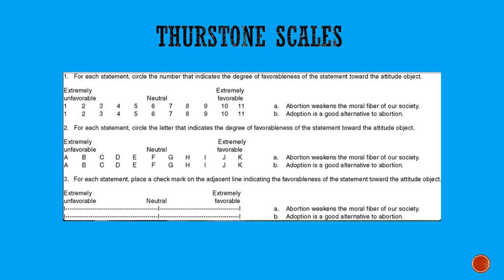At this point, you're not asking the person what his or her attitude is. You're simply asking them to rate: is this a positive or a negative statement about abortion? So for example, 'Abortion weakens the moral fiber of our society' — regardless of what your attitude about abortion is, you would probably agree that this is an extremely unfavorable statement. You would evaluate that statement probably as a one or a two on the extremely unfavorable end, then move on to the next statement. You generate a large number of these statements and have people rate them.